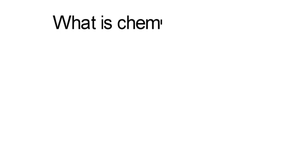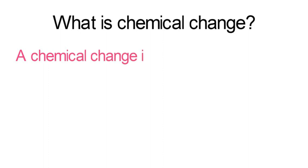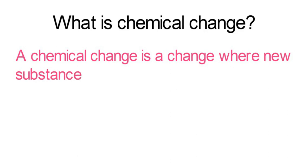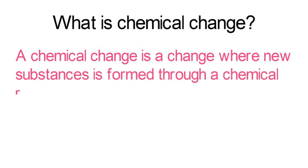What is a chemical change? A chemical change is a change where new substances are formed through a chemical reaction, like when a fruit ripens.